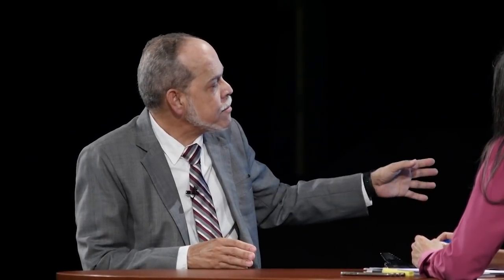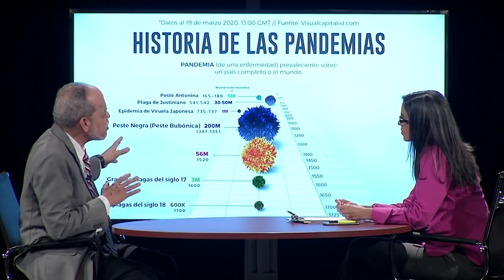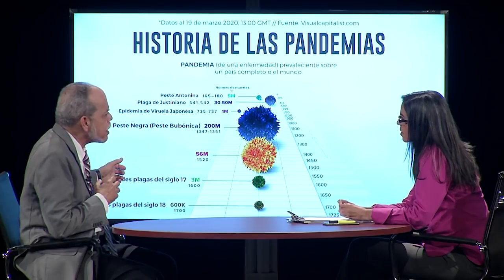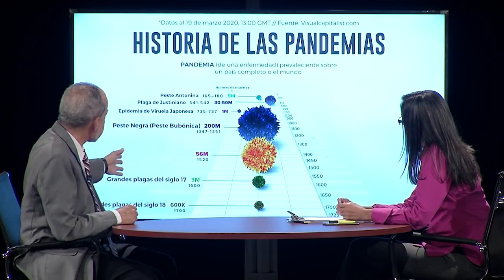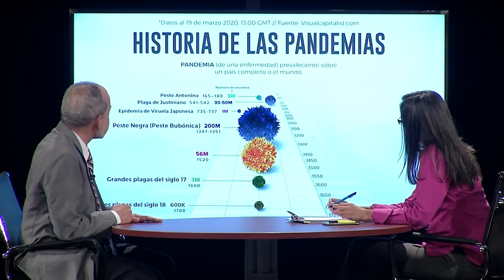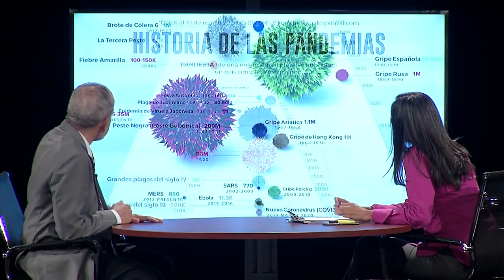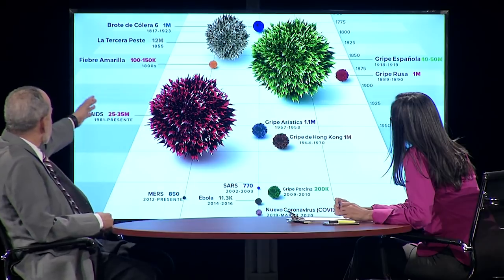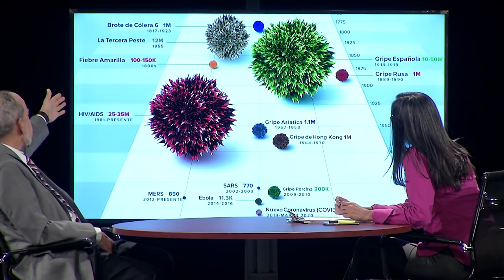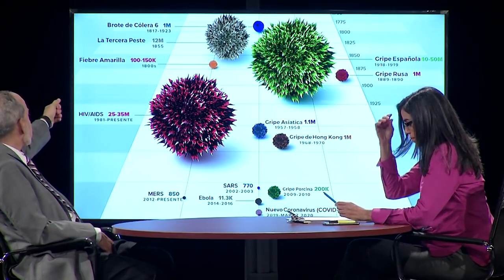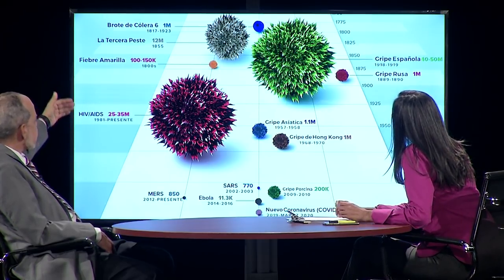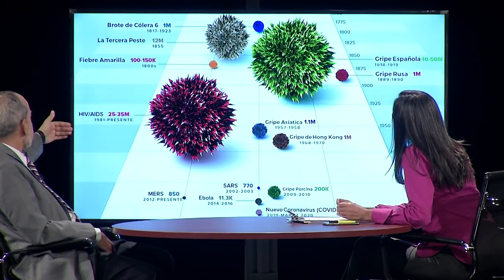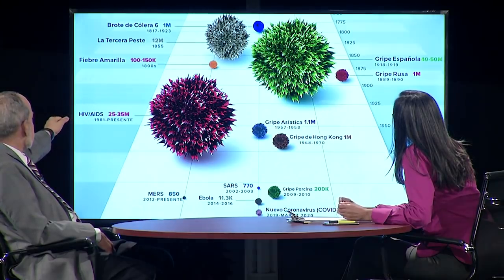Esto nos permite ver que el mundo ha pasado por pandemias y periodos de grandes muertes, y pudiéramos seguir hasta nuestros días. El cólera en los años de 1817 a 1923 tuvo un millón de muertos. La tercera peste, la misma peste que regresó porque no teníamos antibióticos, mató a 12 millones de personas en el año 1855.